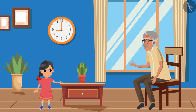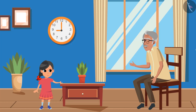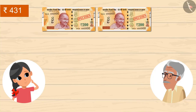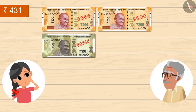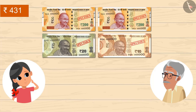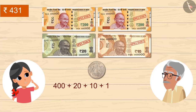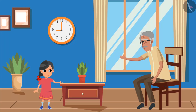Very good. Now, tell me — if I give you a ₹2,000 note and you have to give me back 431 rupees, how will you make 431 out of these notes? 2 notes of 200, 1 note of 20, 1 note of 10, 1 coin of 1 rupee. So, 400 plus 20 plus 10 plus 1 gives a total of 431 rupees. Absolutely right, Gudi.